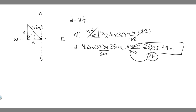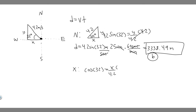Now for west, we find the x-component — the horizontal velocity. In our triangle, cosine of 32 equals adjacent over hypotenuse, so cosine(32) = x / 4.2. Multiplying both sides by 4.2 gives x = 4.2 × cos(32°). The distance west equals 4.2 × cos(32°) multiplied by time. Again, we convert 25 minutes to seconds by multiplying by 60.